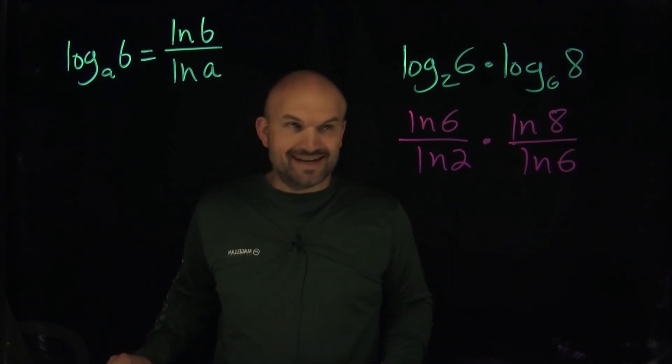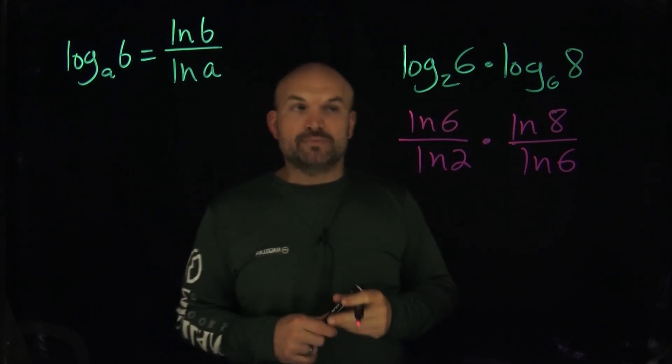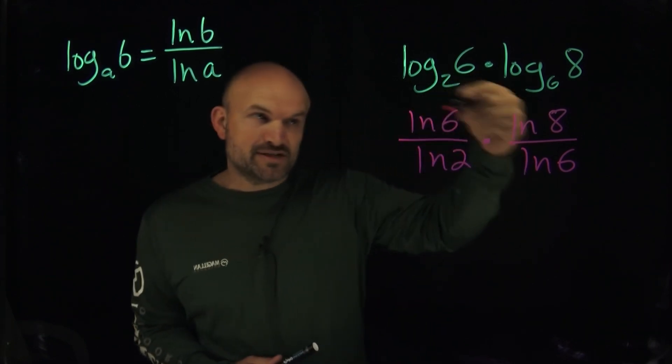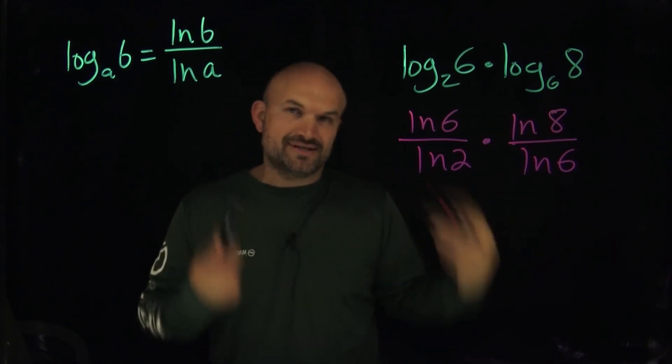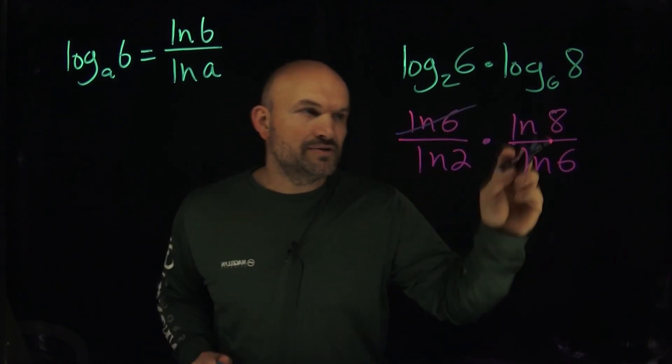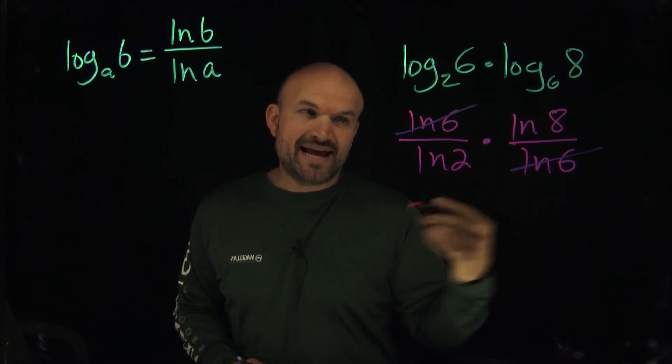So now hopefully you recognize that something interesting is happening. As I'm multiplying these, or at least everything is separated by multiplication, I noticed that I have the same expression, ln of 6 and ln of 6 in the numerator, as well as in the denominator. So now I can use my division property and divide those out. That's now going to leave me with ln of 8 over ln of 2.